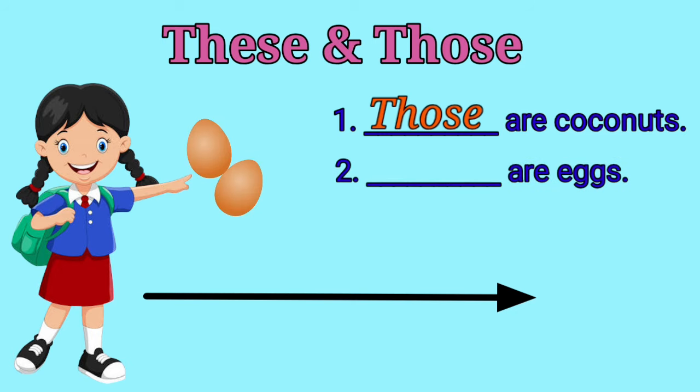Number 2, dash are eggs. Are the eggs near to me or far away? Very good, it's near to me, so what shall we use? That's right, these are eggs.